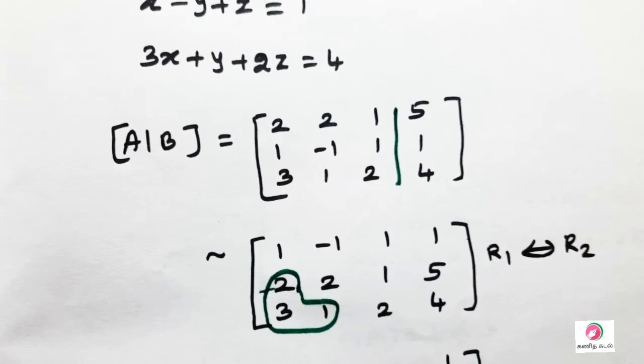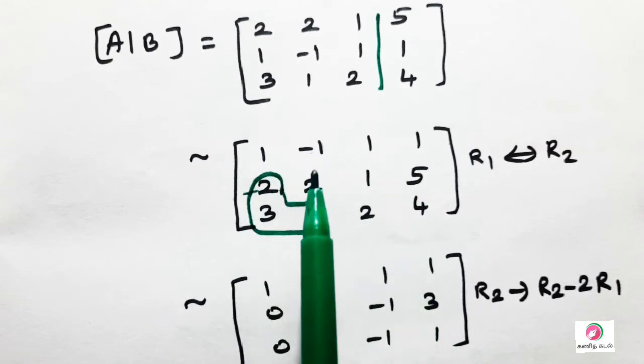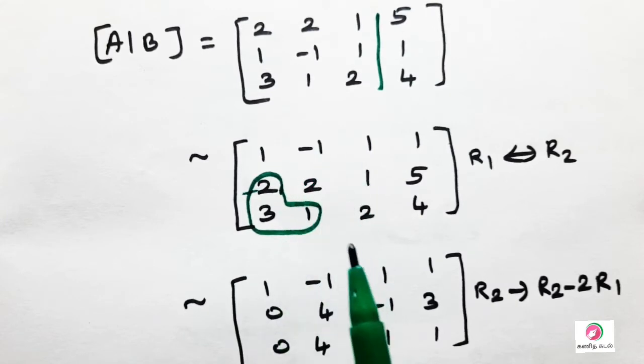The operation R2 tends to R2 minus 2R1. 2 minus 2 equals 0, 2 minus 2 equals 0. If we change the third row, then we will change the third row.